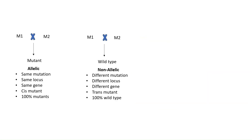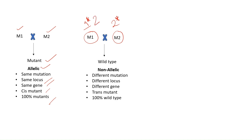Now let's summarize. From the complementation test: when mutant one is crossed with mutant two and the result is all mutants, that means it is allelic — mutation on the same gene, same locus, or cis mutant, giving 100% mutants. When the mutation is on different genes, M1 has gene one mutated and M2 has gene two mutated, so they complement each other and we get wild type. In M2 we also have a normal gene one, and in M1 we also have a normal gene two, so in the next generation the normal copies complement the mutated ones, giving all wild-type progeny — meaning they are non-allelic.